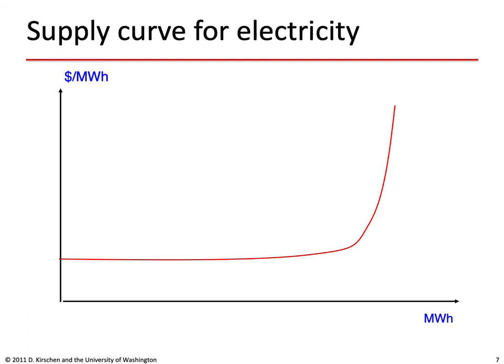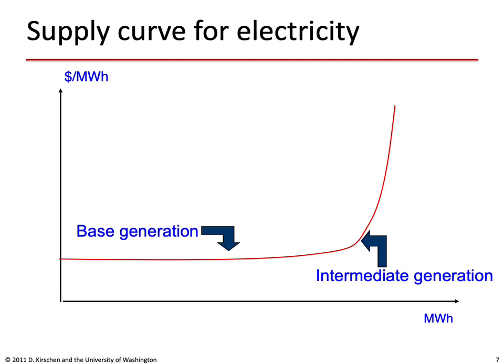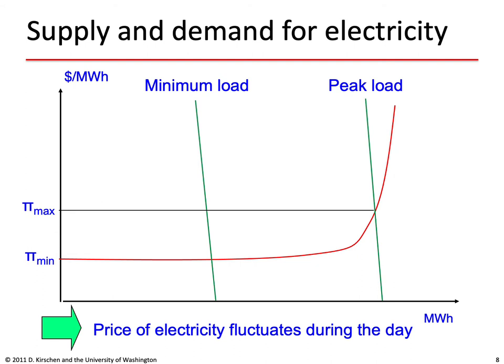The supply curve for electricity has a characteristic shape determined by base generation with relatively similar marginal costs, intermediate generating units that are somewhat more expensive, and peaking generation that is significantly more expensive. When we superimpose the supply and demand curves, minimum load leads to a rather low price while peak load leads to a higher price. As load changes during the day, the price of electricity fluctuates accordingly.